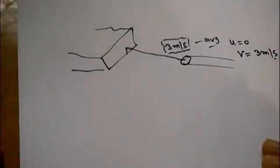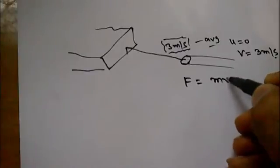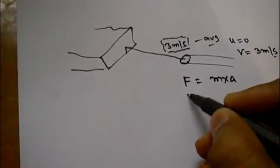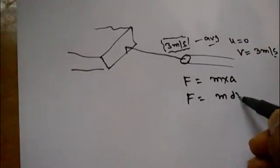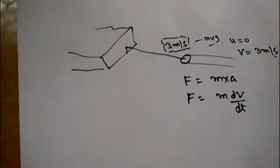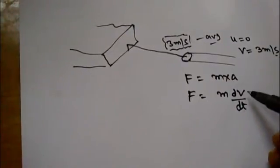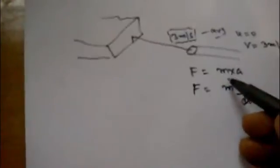As you know, force is equal to mass into acceleration, and acceleration is the change in velocity with respect to time, so force equals mass times change in velocity over time. Here, the mass should not be just mass but the mass flow rate, m-dot. The density of water is mass divided by volume, so from here I can calculate the mass flow rate per second.